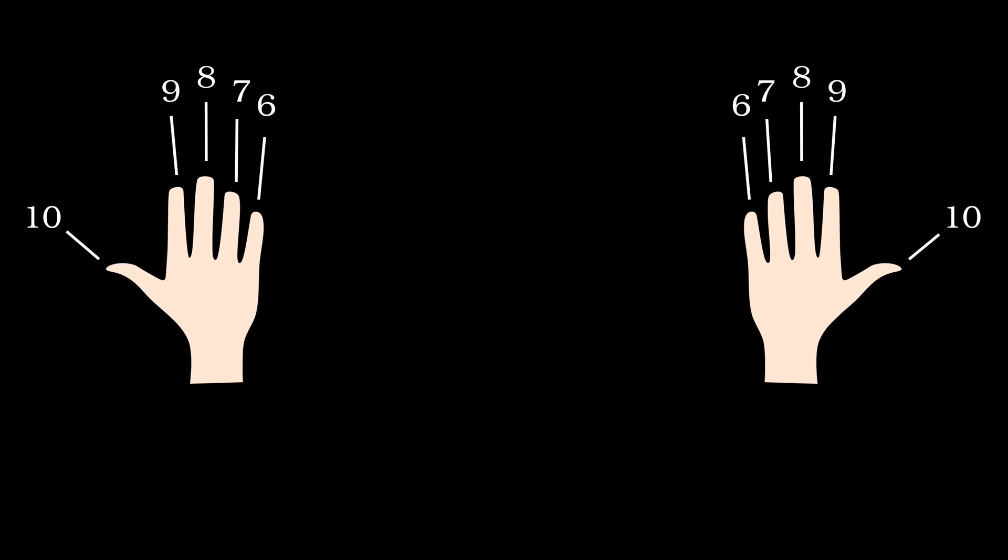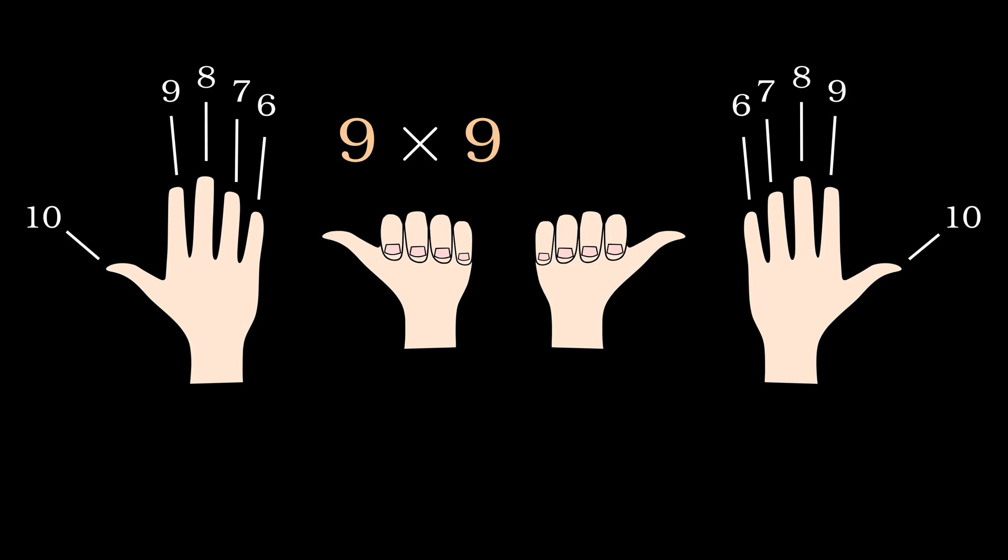This way we form any number from 6 to 9 with our own hands. For example, let's try to work out 9 times 9. To make number 9 with our own hand, all we need to do is hold down the fingers 6, 7, 8, and 9.